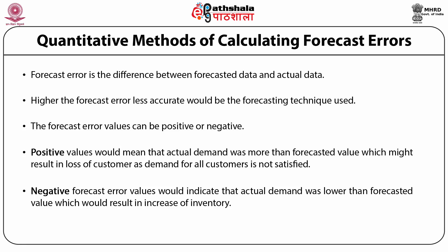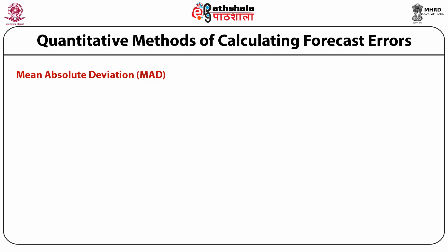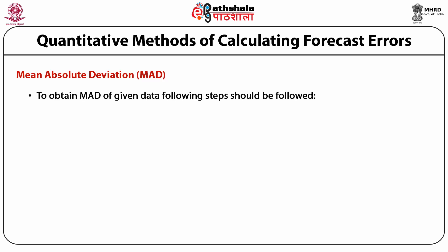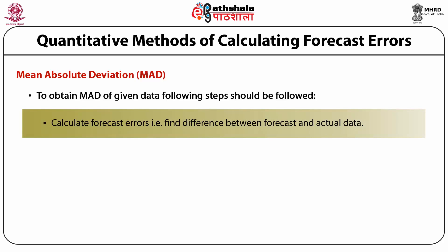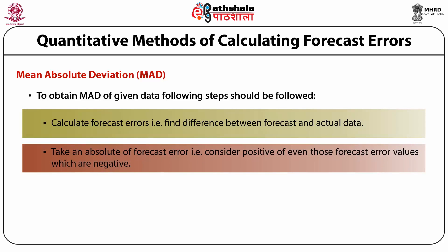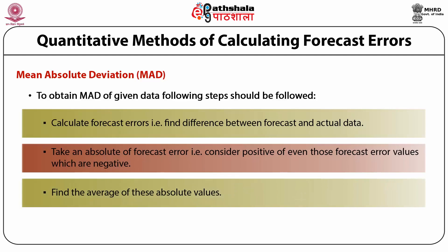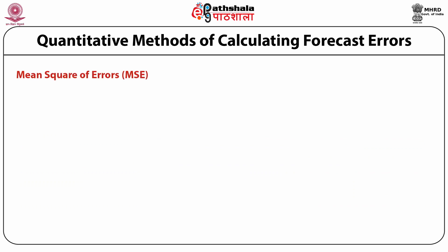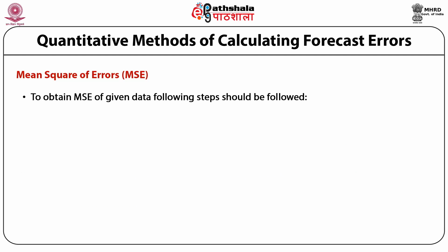Thus, accuracy of the forecasting technique becomes paramount, as a higher forecast error could have a harmful effect on a company's operations. Mean Absolute Deviation (MAD): to obtain the mean absolute deviation of given data, following steps should be followed. Step 1: calculate forecast errors, that is, find the difference between forecast and actual data. Step 2: take the absolute value of forecast error — consider as positive even those forecast error values which are negative. Step 3: find the average of these absolute values.